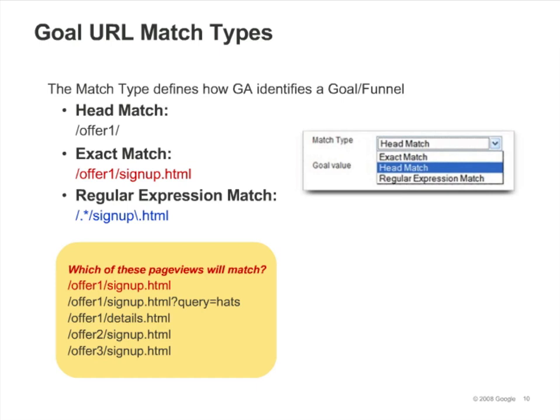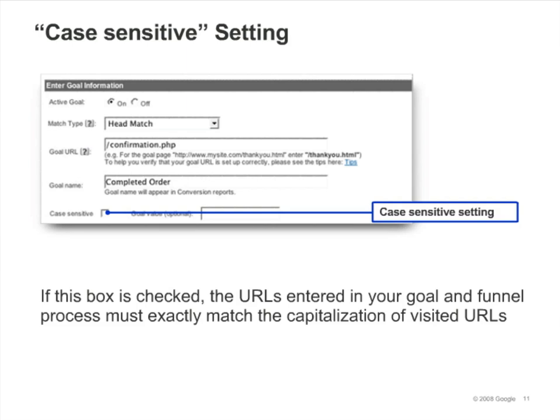Regular expression match gives you the most flexibility. For example, if you want to count any signup page as a goal, and signup pages can occur in various subdirectories, you can create a regular expression that will match any signup page in any subdirectory. Regular expressions will be covered in a later module. When you use regular expression match, the value you enter as the goal URL, as well as each of the funnel steps, will be read as a regular expression. Remember that regardless of which option you choose, Google Analytics is only matching request URIs — in other words, the domain name is ignored.